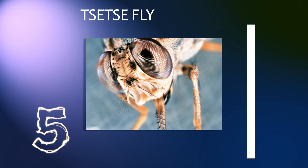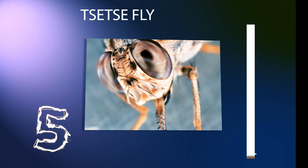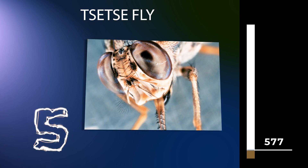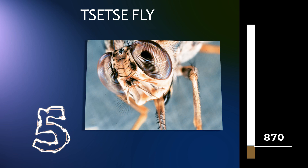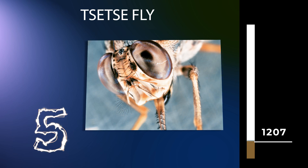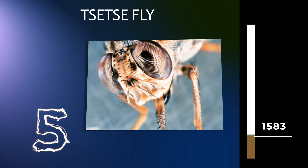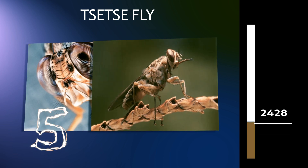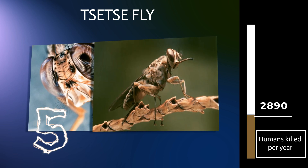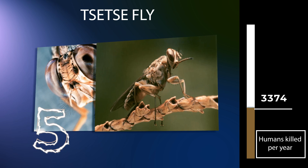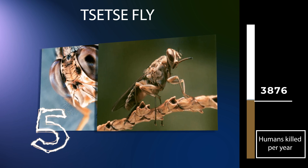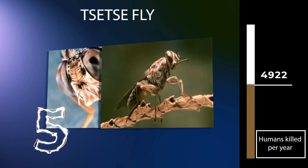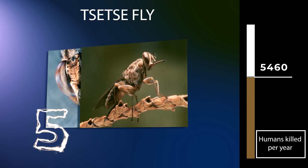Tsetse are large, biting flies that inhabit much of tropical Africa. Tsetse flies include all the species in the genus Glossina, which are placed in their own family, Glossinidae. The tsetse is an obligate parasite, which lives by feeding on the blood of vertebrate animals. Tsetse has been extensively studied because of their role in transmitting disease. They have a pronounced economic impact in sub-Saharan Africa as the biological vectors of trypanosomes, causing human and animal trypanosomiasis.